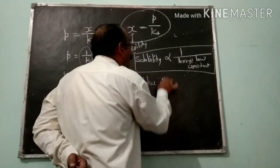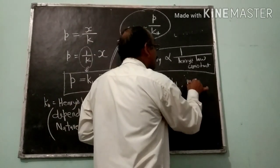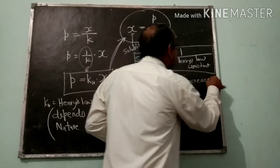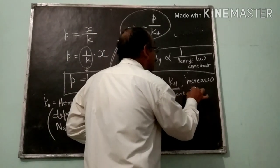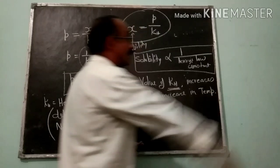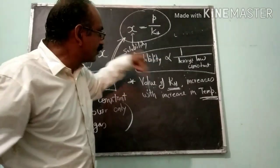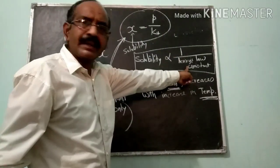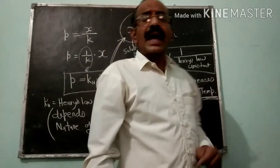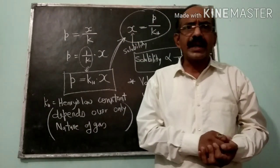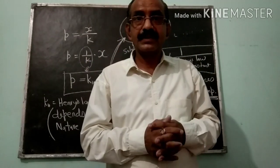Remember that the value of KH, the Henry's Law constant, increases with increase in temperature. As you raise the temperature, the Henry's Law constant value increases, so the solubility of gas in liquid will be reduced. That is why aquatic species are more comfortable in cold water compared to warm water.